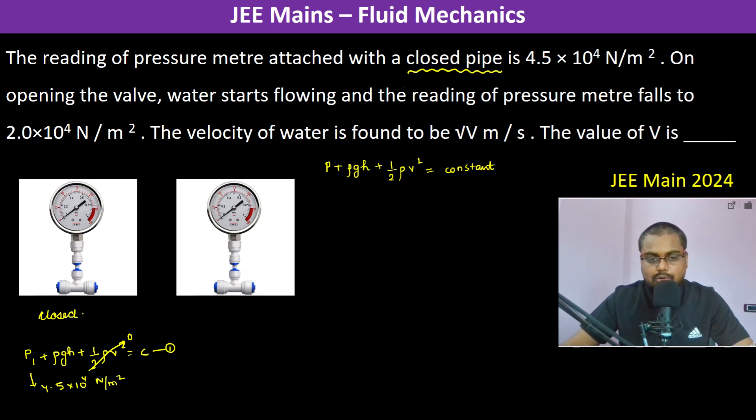Now when it is open, in open what happens? The water is flowing with a velocity v. Therefore, we can write P2 plus rho g h plus half rho v square is equal to constant. Now if we see h is going to be the same and here the pressure P2 is 2 into 10 to the power 4 Newton per meter square.